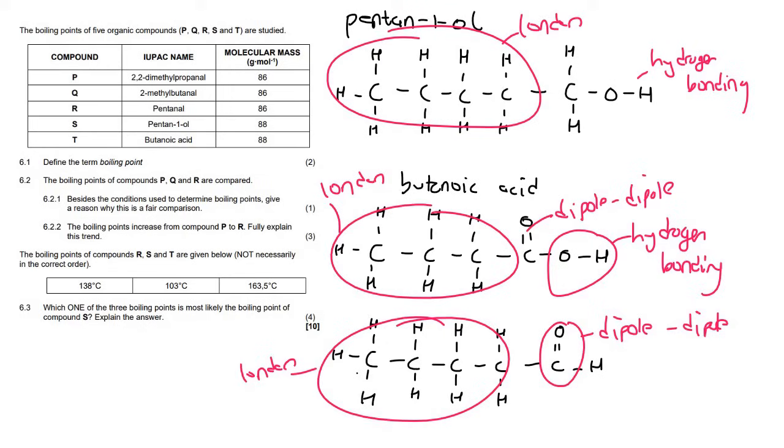So in general, carboxylic acids always have a higher boiling point. Because if you look carefully, they have hydrogen bonding but they also have the dipole-dipole. And then they have the London force. Alcohols will be second because they've got the hydrogen bonding. And then they've also got the London forces. But then, and then the last one would be the aldehyde. Because it only has the dipole-dipole and then it's got the London forces.